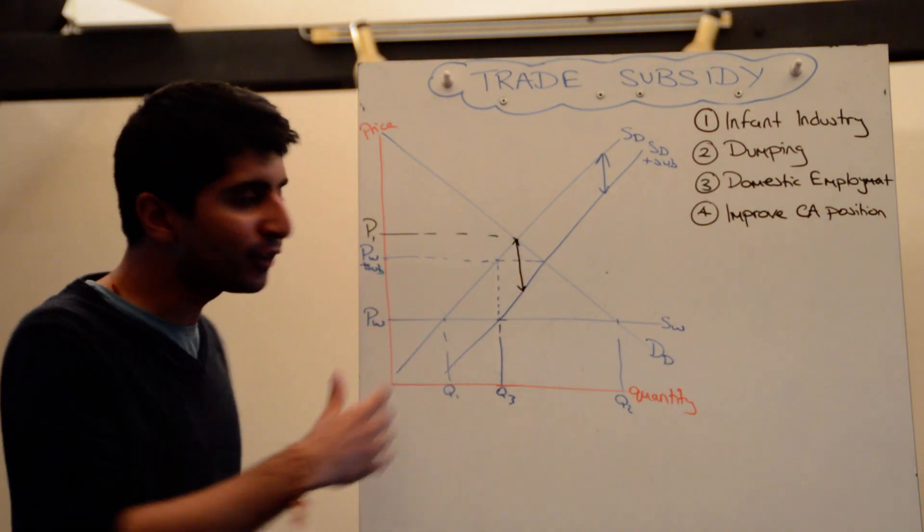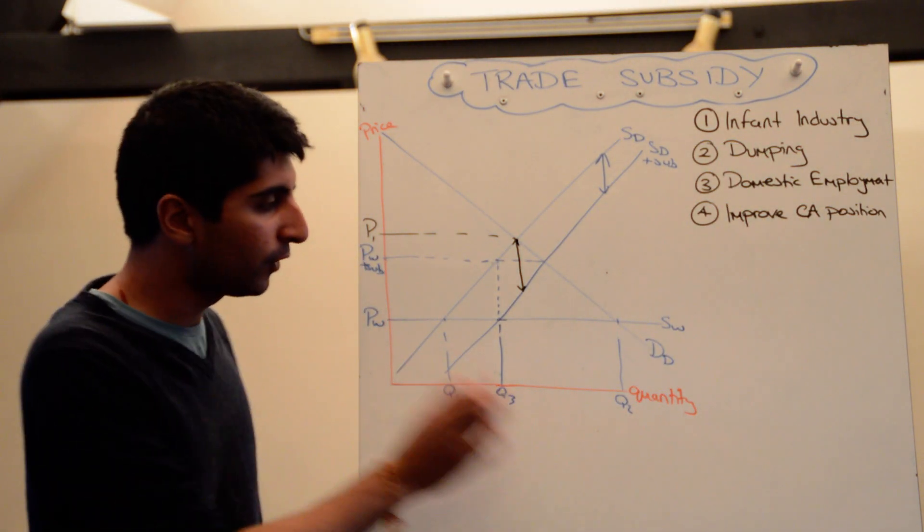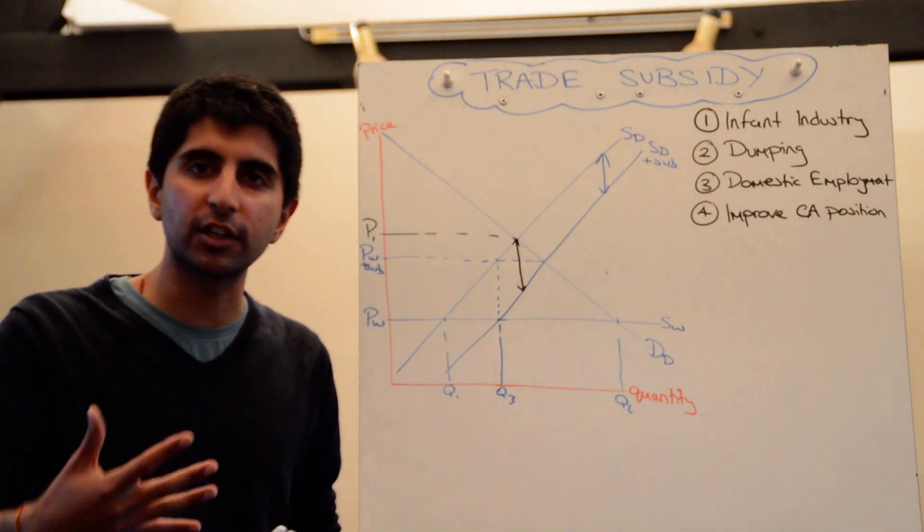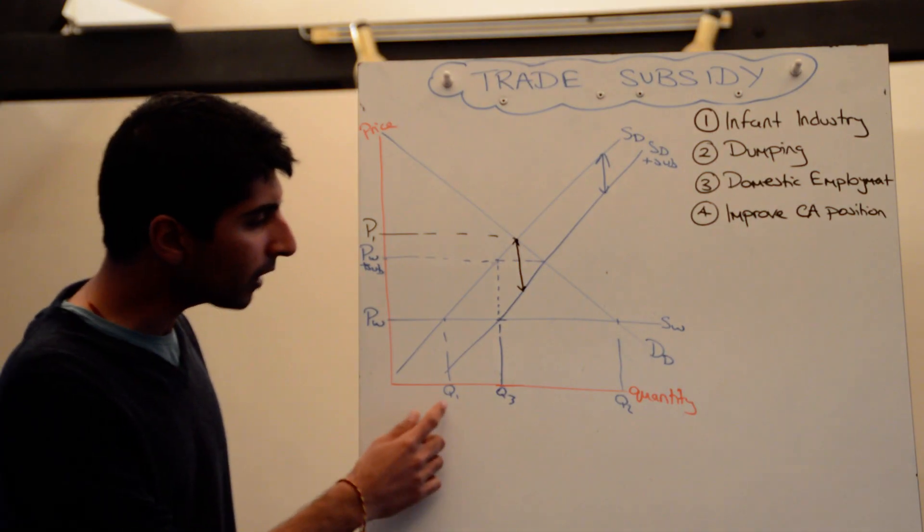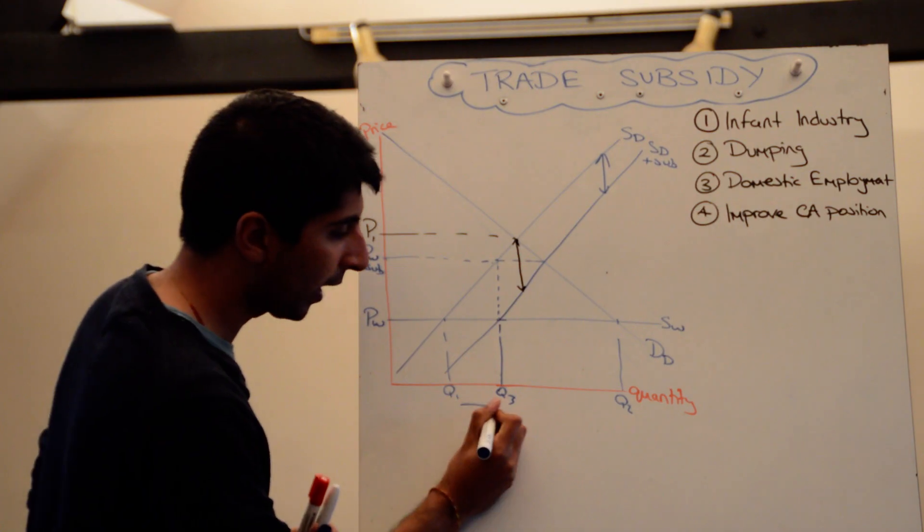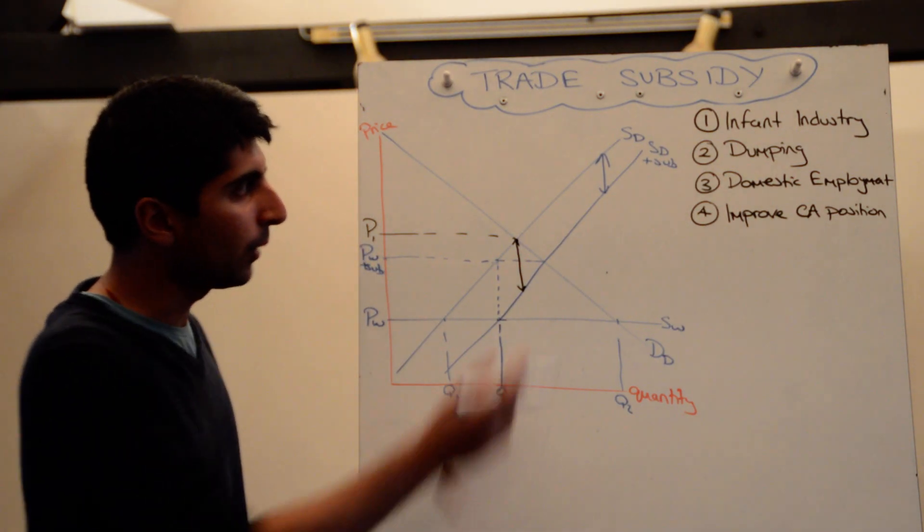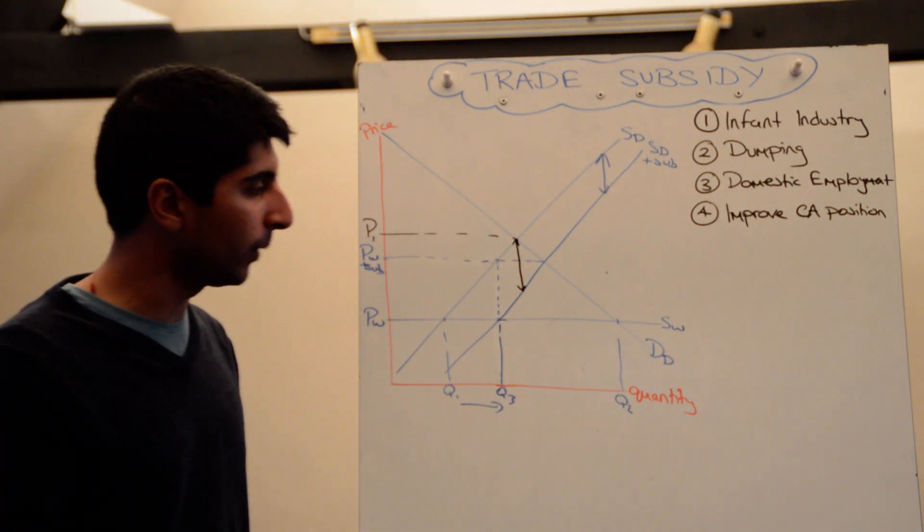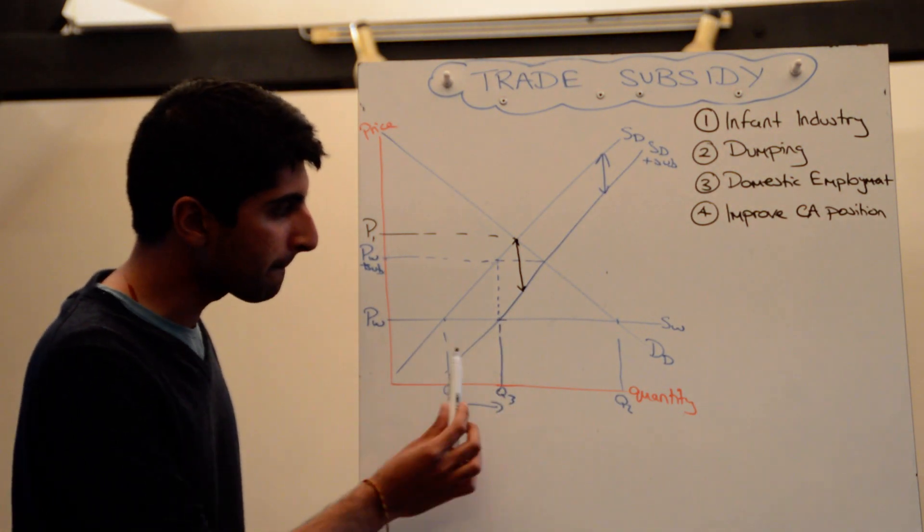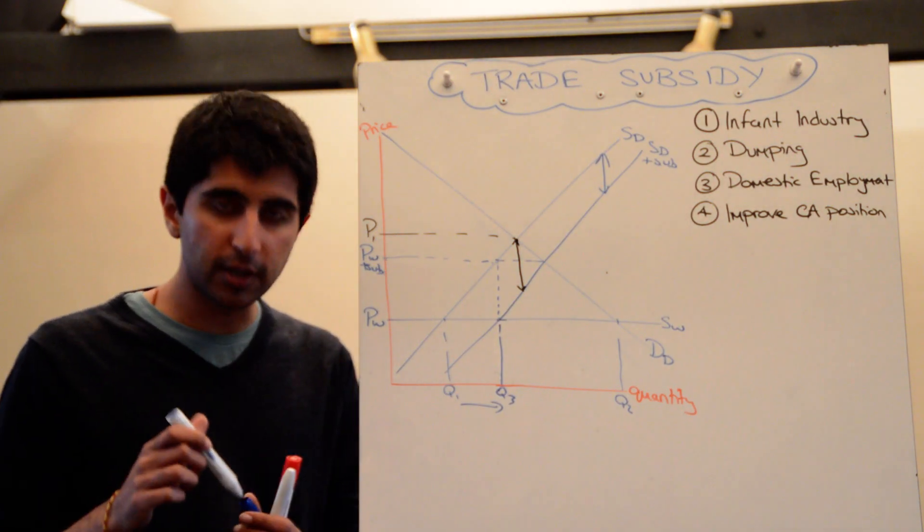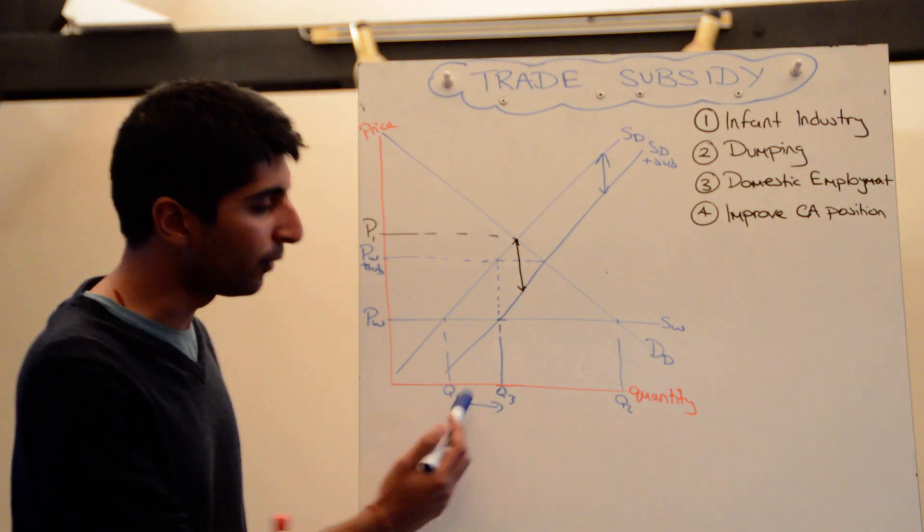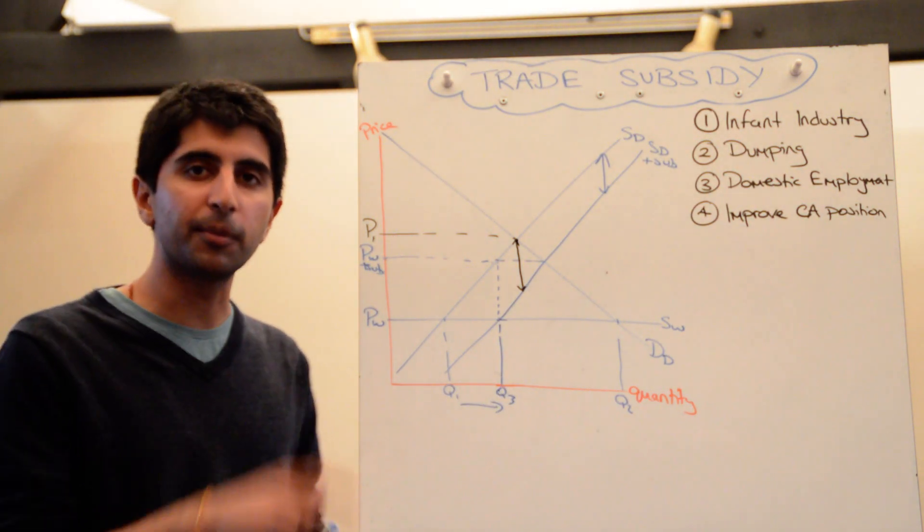Which means that there is no change in demand, because the price stays the same. So consumer demand stays at Q2, but there is a change in domestic supply. So domestic supply initially was at Q1, it's now increased all the way to Q3. With new firms, with new suppliers in the market, with the subsidy, there is a greater supply at the price of PW here. So no change in terms of domestic demand. So there is no loss of consumer surplus here, because the prices stay the same. But there is an increase in domestic supply from Q1 to Q3.